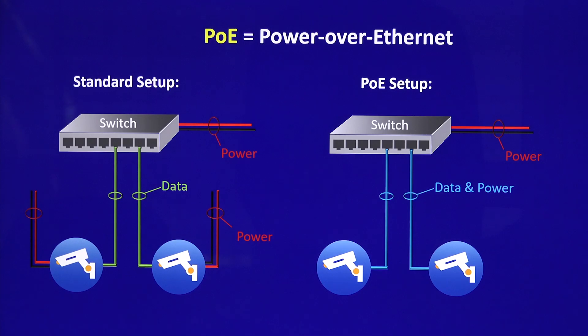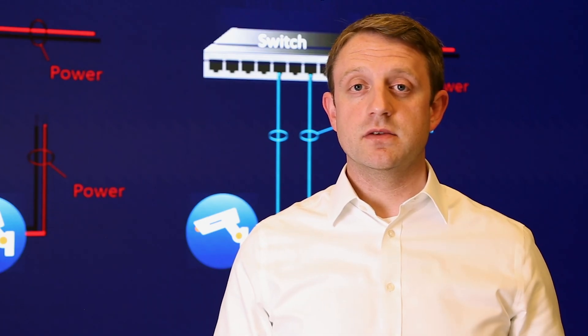Why should we use Power over Ethernet? In the past, if you wanted to use an IP camera, you needed two cables — one cable for power and one cable for data. It's a huge effort in installation, and if you have a mistake or a fault somewhere, it is difficult to track it down. Thanks to PoE, wiring is now much easier. We now have the ability to push power and data through one cable only to the load.